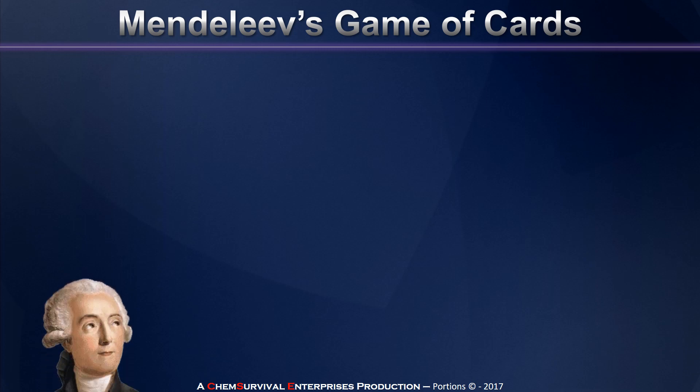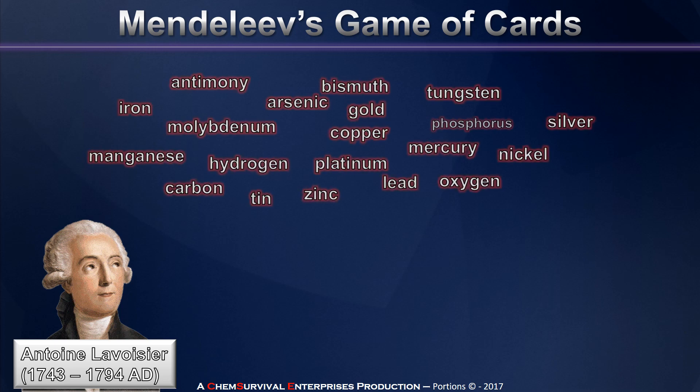Before I can talk about Mendeleev himself, I first have to acknowledge Antoine Lavoisier, who in the 1700s, along with his contemporary scientists, determined a list of elements. They were able to identify several dozen elements using the technology that was available to them in their day. Now although this was valuable information, the identity of each of these elements, there's no organization to the list. It's just sort of a giant hodgepodge of different elements.